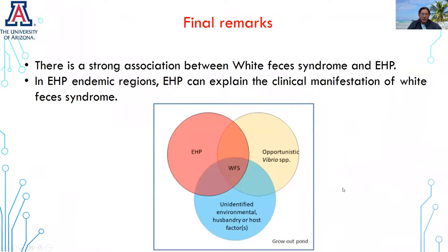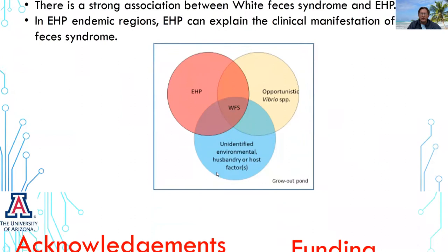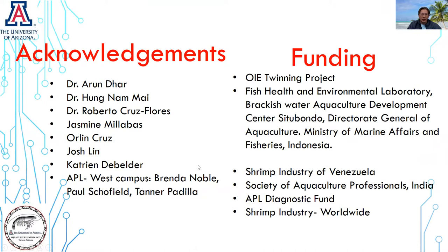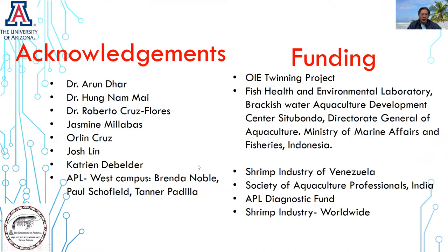As final remarks, we found a strong association between White Feces Syndrome and EHP. In EHP endemic regions, EHP can explain the clinical manifestation of White Feces Syndrome. EHP is the primary pathogen in our study, not the only factor causing White Feces, but in our cases it was the primary pathogen — in association with opportunistic pathogens such as Vibrio and possible unidentified environmental factors. I want to thank the team from the Aquaculture Pathology Lab at the University of Arizona and the funding agencies. Thank you, and I welcome any questions.